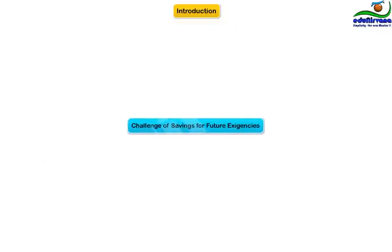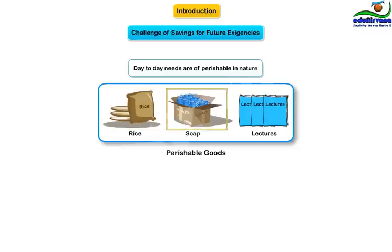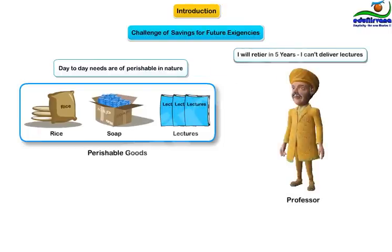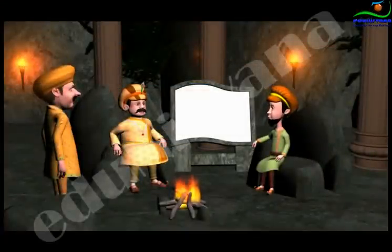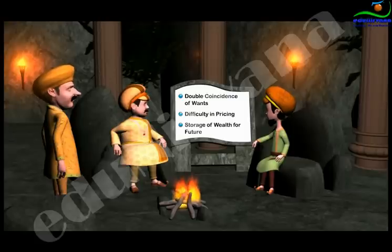The third challenge is savings for future exigencies. Most day-to-day needs are of a perishable nature — for example, rice, soap, or intangibles like lectures. There is no way one can save these for use 10 years down the line. I will retire in another five years, can't deliver lectures, and feel I will have nothing to bank upon for my sustenance. The professor concluded his three problems: double coincidence of wants, difficulty in pricing, and storage of wealth for the future.